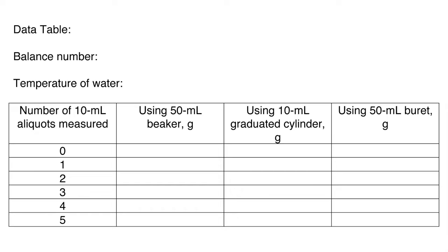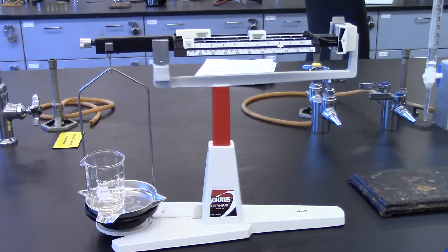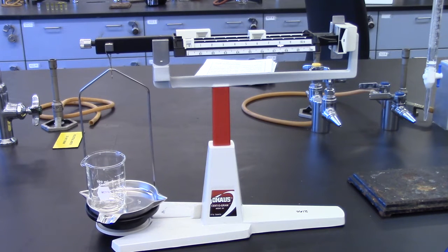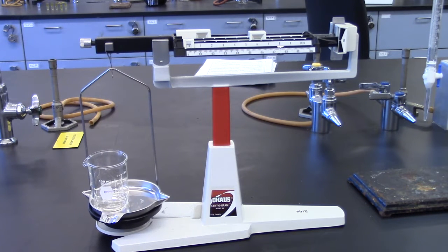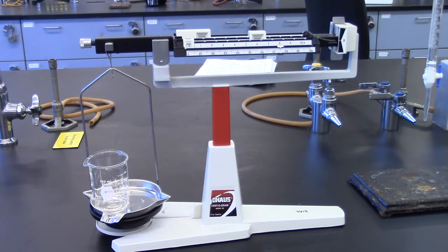You will fill out a data table like this one. After you have measured and weighed five 10 milliliter samples, empty the 100 milliliter beaker and dry it. Weigh the empty, dry beaker and record mass.